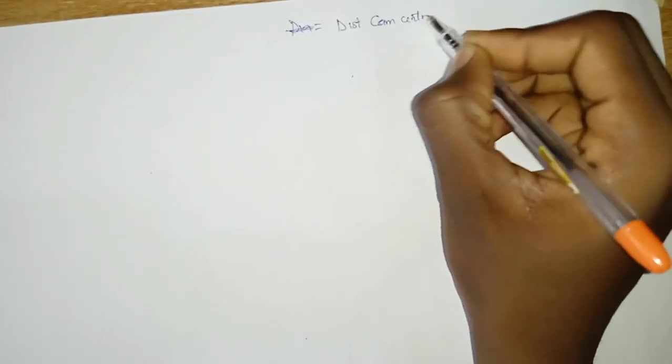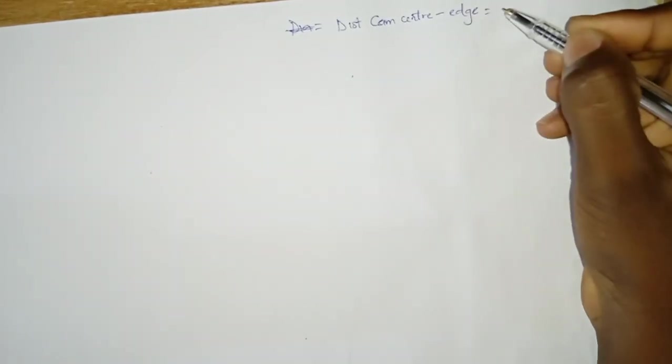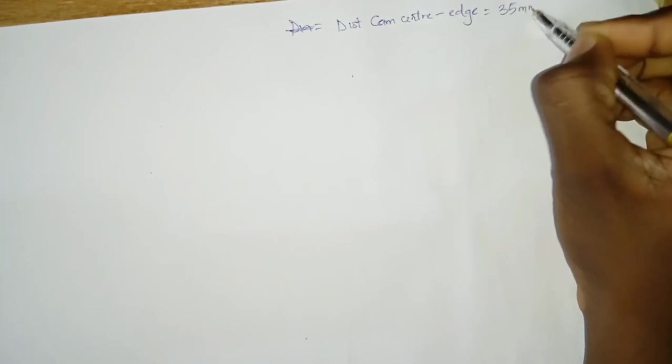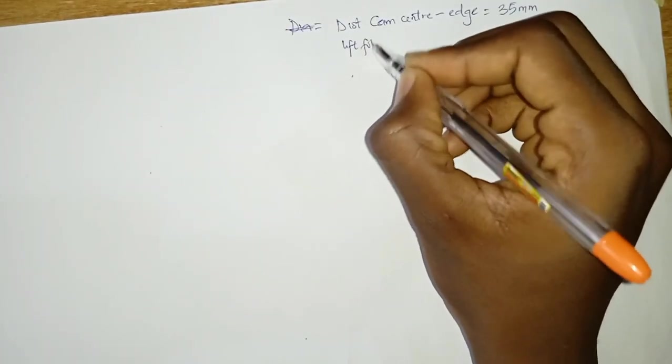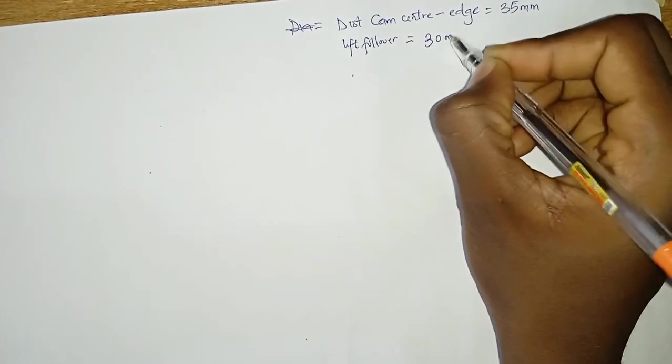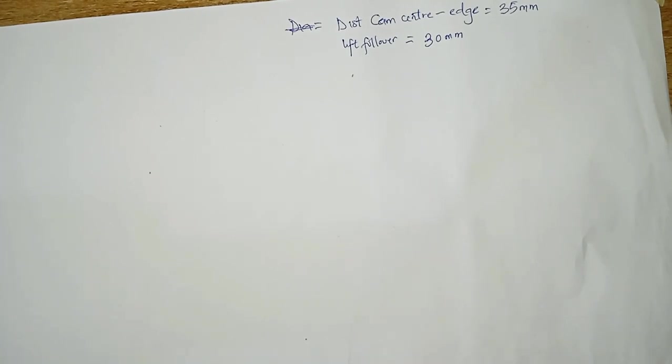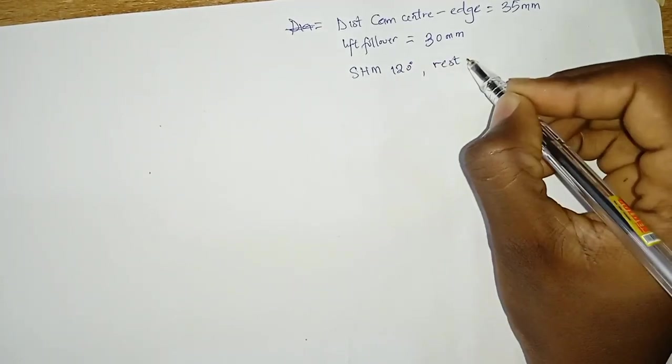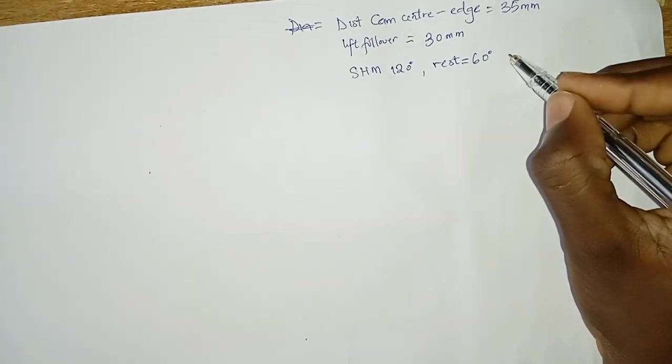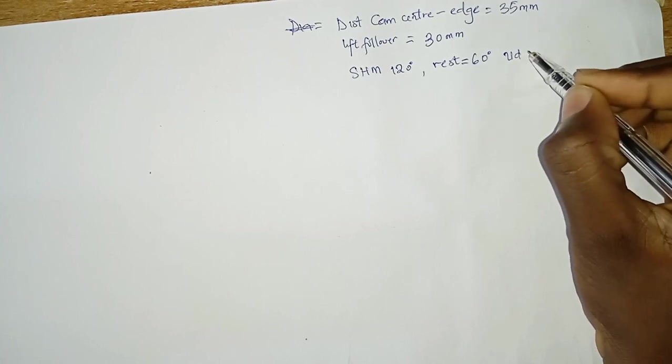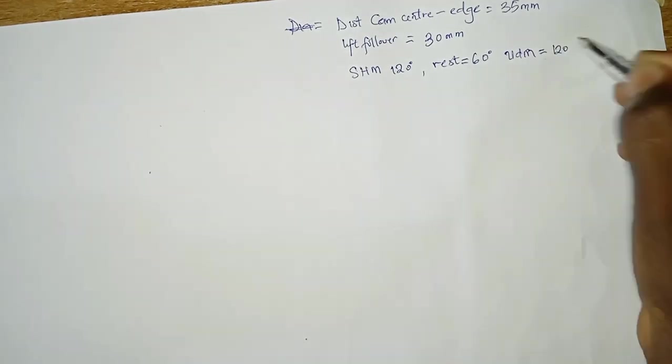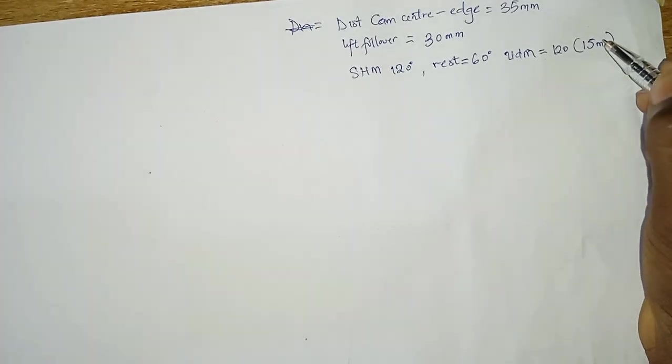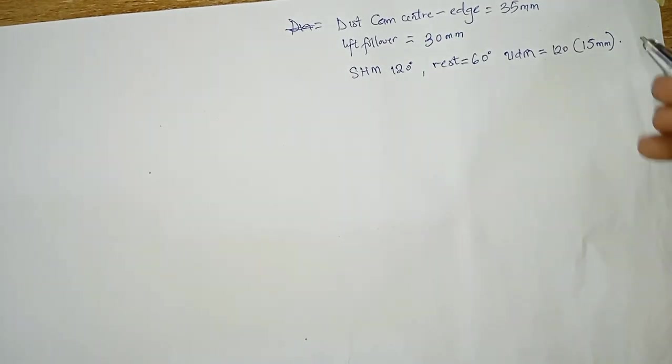From the question, we're given distance from the center of the cam to the edge to be equal to 35mm. And then we're also given the length of the follower to be equal to 30mm. Now from the question, it seems like we had a simple harmonic motion of 120 and then it was on a rest of 60. And then it finally has a uniform force with uniform decelerating motion as 120 but through 15mm.